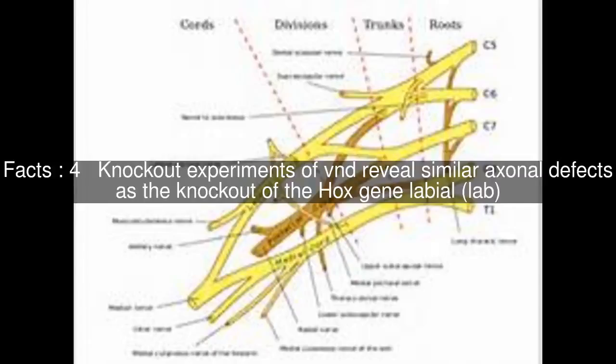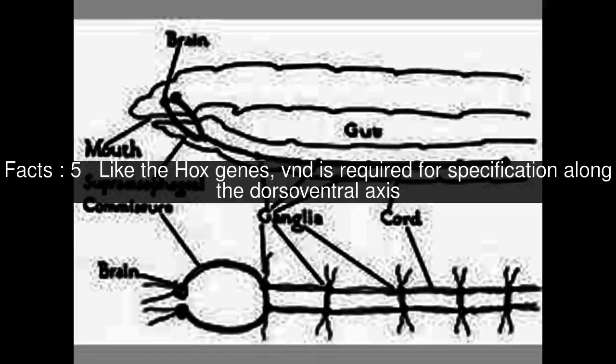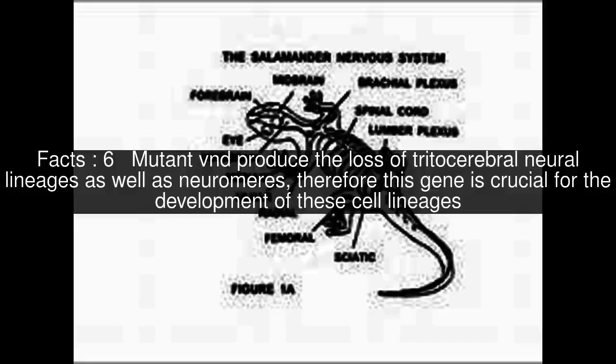Knockout experiments of VND reveal similar axonal defects as the knockout of the Hox gene labial. Like the Hox genes, VND is required for specification along the dorso-ventral axis. Mutant VND produce the loss of tritocerebral neural lineages as well as neuromers, therefore this gene is crucial for the development of these cell lineages.